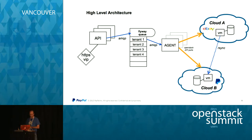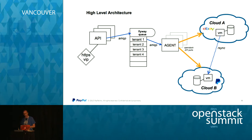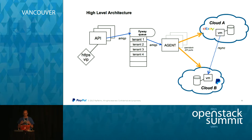In the architecture, on the far left there's an API server. A user might enter: I want to migrate a tenant from this zone to this zone. That goes into the Flyway queue, which is a list of tenants to be processed. It gets picked up out of the ActiveMQ queue by an agent listening for messages. That agent starts the process of initiating the users, roles, and target based on the source. Then it sends a special message to the hypervisor in Cloud B to rsync its data from the hypervisor in Cloud A.